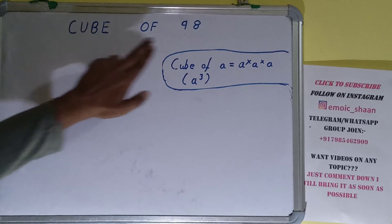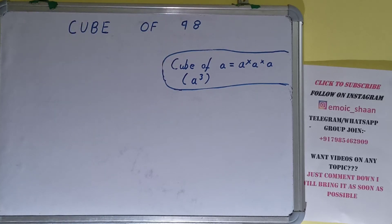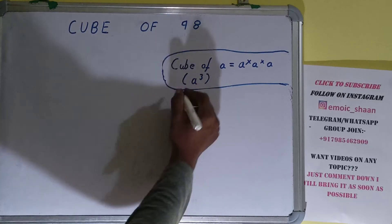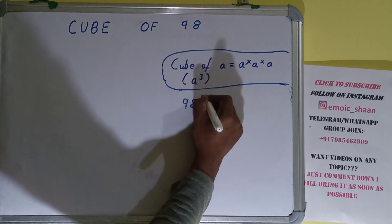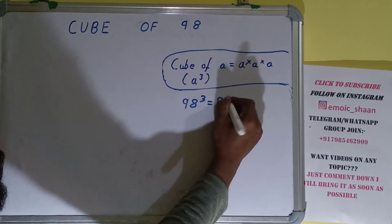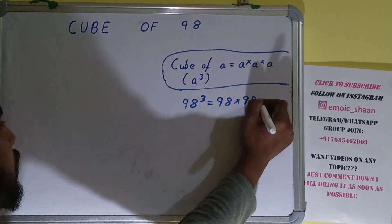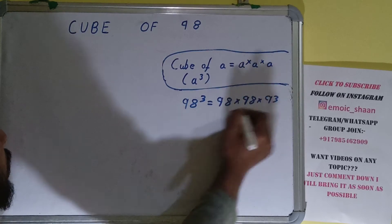That was the explanation of formula. Now moving on to our question, we need cube of 98. So what we need to do is in place of this a we need to keep 98. 98³ equals 98 into 98 into 98.